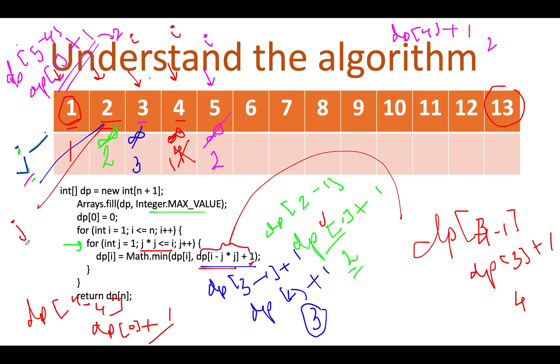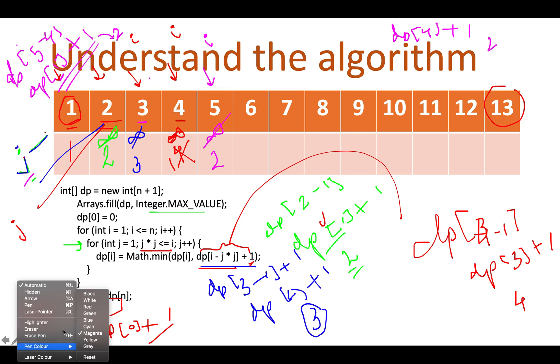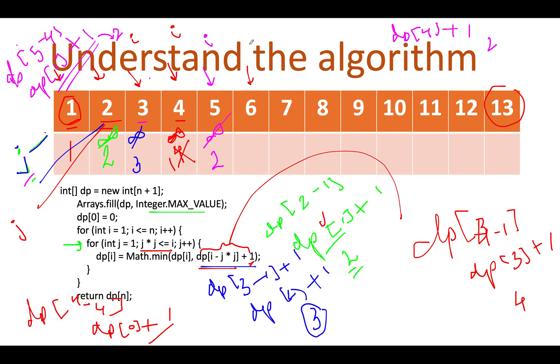Let's continue the process. Next, I move the pointer of j to three. j square is nine, nine is greater than five. We have to abort the process. Let's move on to the next iteration. And here i turns out to be equal to six.